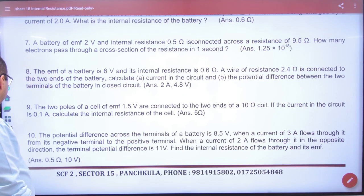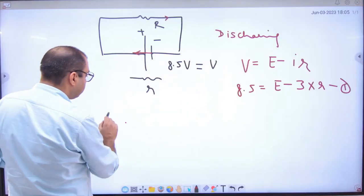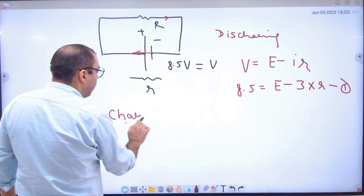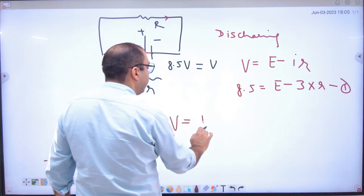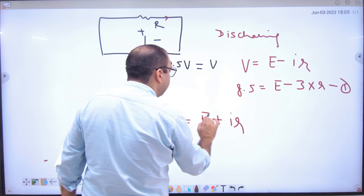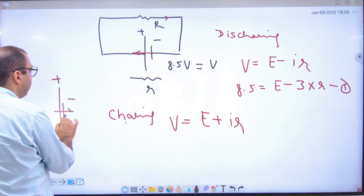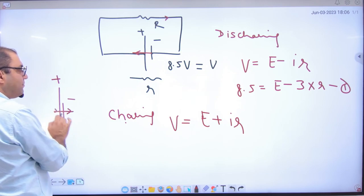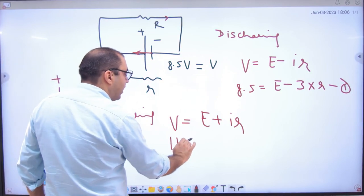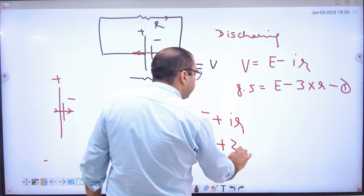In the second case, charging, what will be V? E plus IR. Because in the battery, the current is opposite. If the current is entering, then charging. So 11 equals E plus 2R.